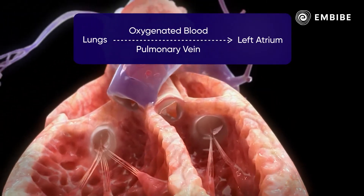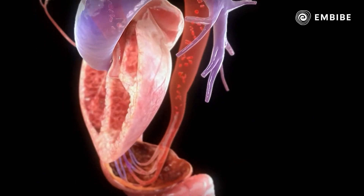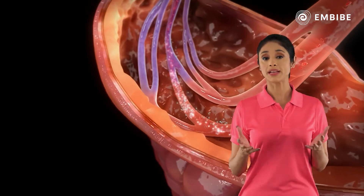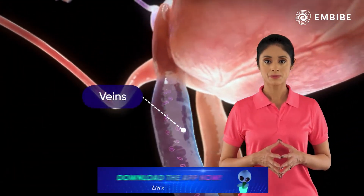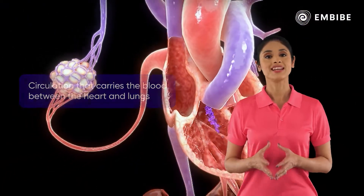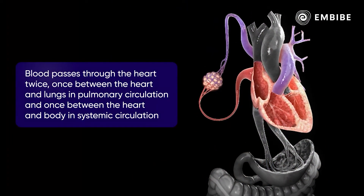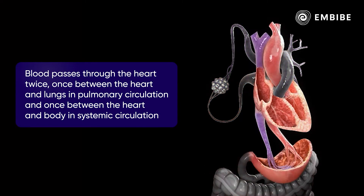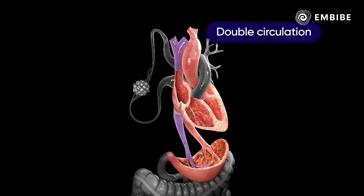The left ventricle has an ascending aorta which supplies oxygenated blood to all parts of the body. Once this blood reaches the body, it gives up oxygen and picks up carbon dioxide. The deoxygenated blood then returns to the right atrium through the vena cava. This part of the circulatory system that carries blood between the heart and body is called systemic circulation. These circuits make the blood pass through the heart twice — once between the heart and lungs in the pulmonary circuit, and once between the heart and body in the systemic circuit. This is called double circulation.